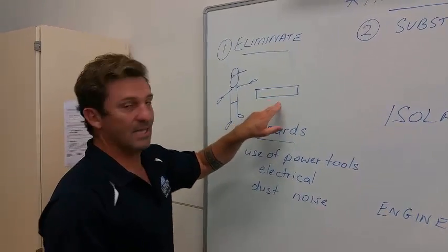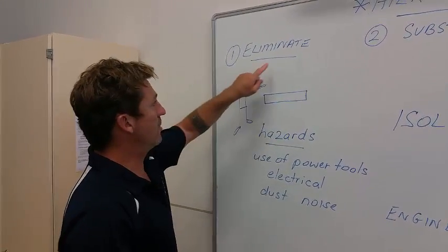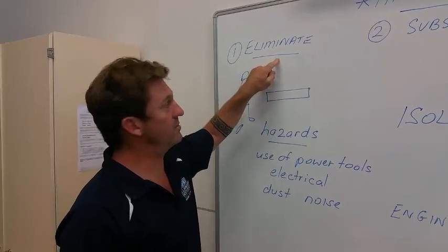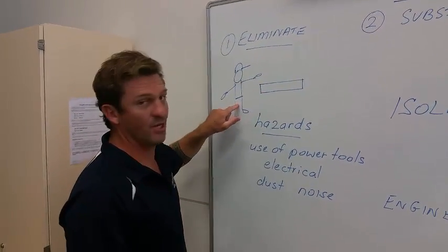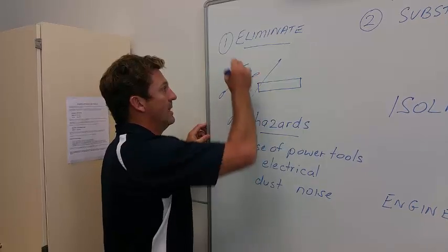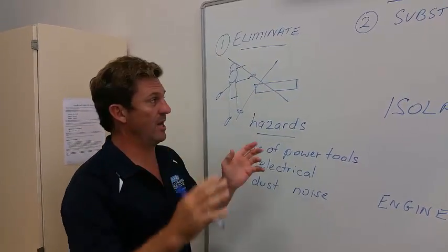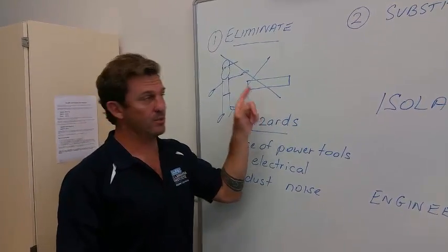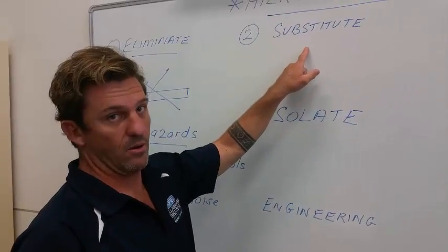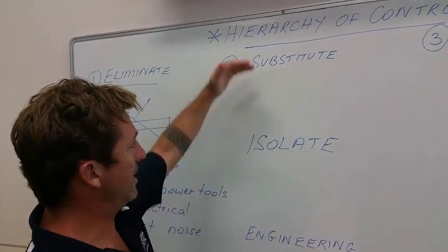What we need to do is, he needs to cut this timber. Now, the top of the hierarchy of controls, the best way of him avoiding getting hurt, would be just to eliminate that completely. But we can't, we need to put that timber in. So we'll go to the next hierarchy of controls, which is part 2.